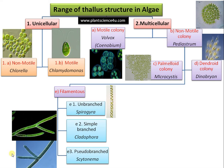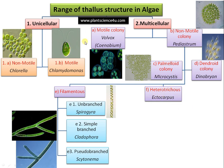There are some algae which are pseudo-branched, like Cytonema, where the filaments look like they are branched but actually there is a close association of two individual filaments. The next is a more developed organization — the heterotrichous form. 'Hetero' means different and 'trichus' means filament. There are two types of filament: a prostrate filament and an erect filament, as in the case of Ectocarpus.